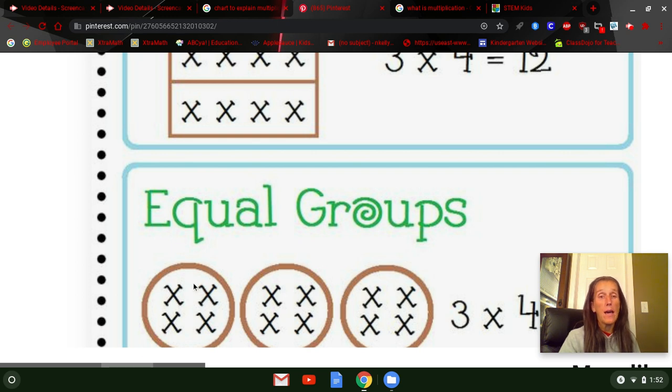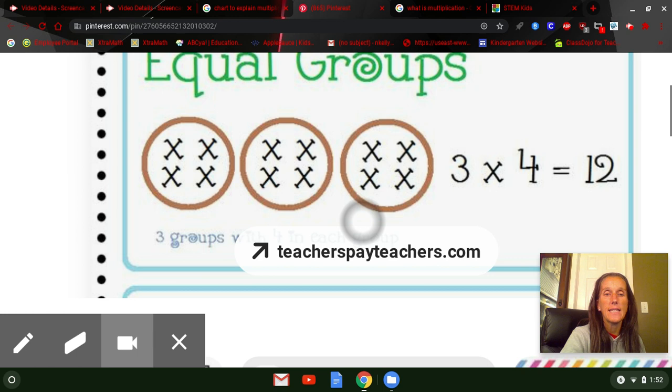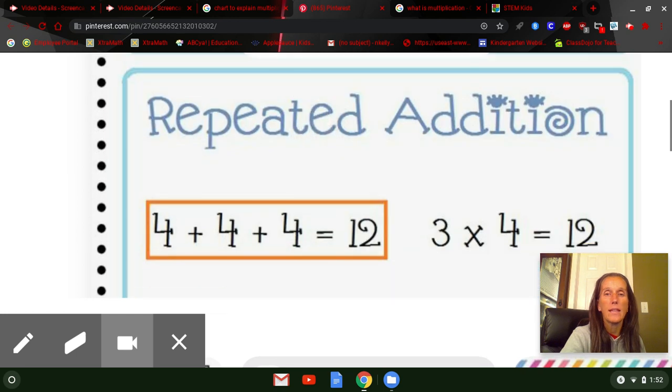Again, we could add up four plus four plus four. But a quicker way of saying it would just be to say three times four. Okay, let's move on and see if we can look at one way we can think about it.